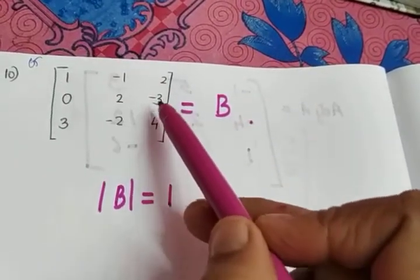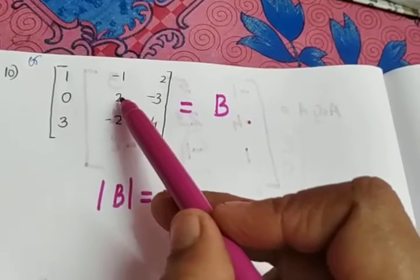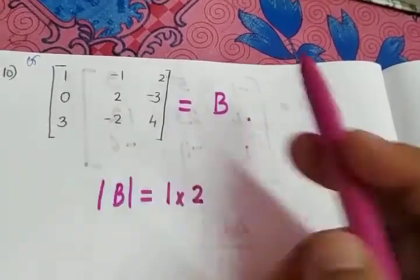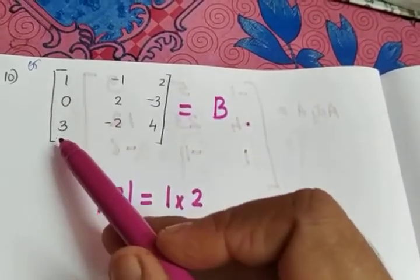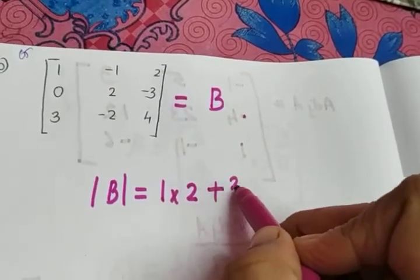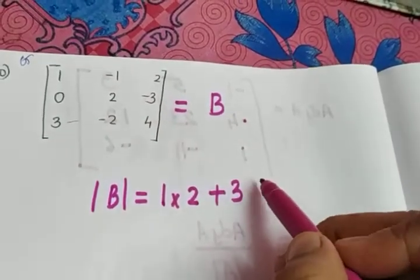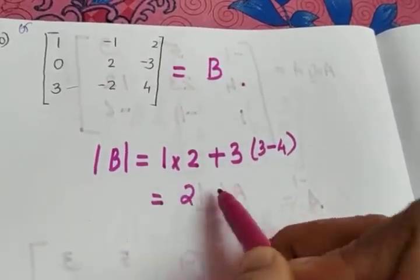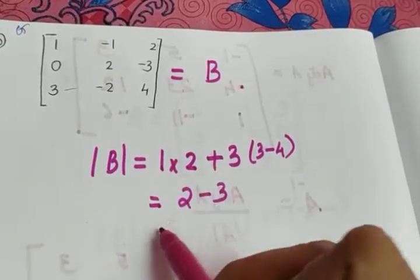Expanding along the first column: the first element is 1 — avoid its row and column, so 2×4 = 8, minus (-3)×(-2) = 6, giving 8 - 6 = 2. The element 0 can be avoided. The next element is 3, in the third row, first column, so sign is (+). Avoid its row and column: (-3)×(-1) = 3, minus (-1)×2 = -4, giving 3 - (-4) = 3 minus 4... wait, 2×(3-4) = 2×(-1) = -2, plus 3×(-3) = minus... continuing: 3 into [(-1)×2 - (-3)×(-1)] = 3×(-2 - 3) = 3×(-1) = -3.